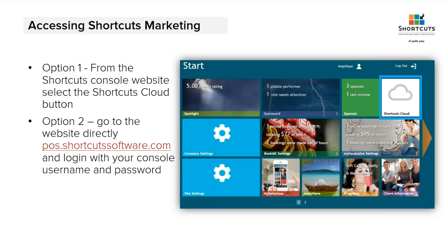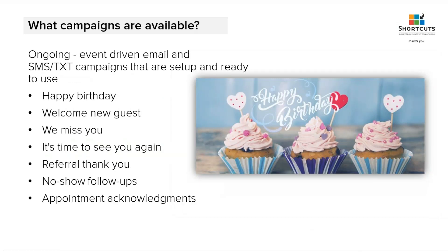Now that Shortcuts has been configured, you've set up your social media and your point of sale — where exactly do you go to set up your campaigns? If you already have a Shortcuts Online console link, you would go to the console and press the button in the corner that says Cloud. Or, if you already know your cloud address — which starts with pospointofsale.shortcutsoftware.com — and you know your username and password, you can log in directly. Once you log into the cloud, you can start setting up campaigns.